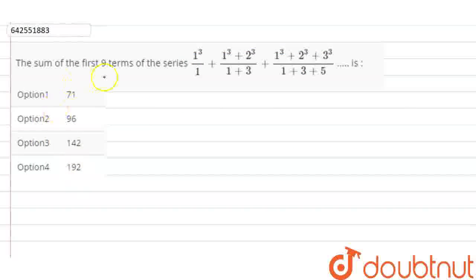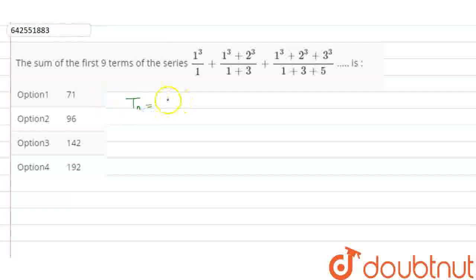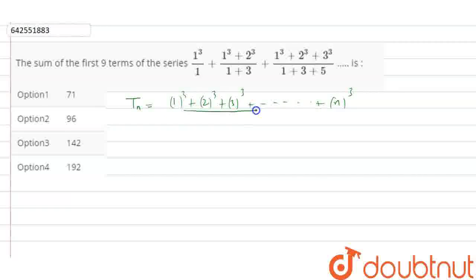So the sum of the first 9 terms of the series is — the series is 1³/1 + (1³+2³)/(1+3) + ... till the nth term. We will find the nth term: the numerator is 1³ + 2³ + 3³ + ... + n³, divided by the denominator 1 + 3 + 5 + 7 + ... + (2n−1).